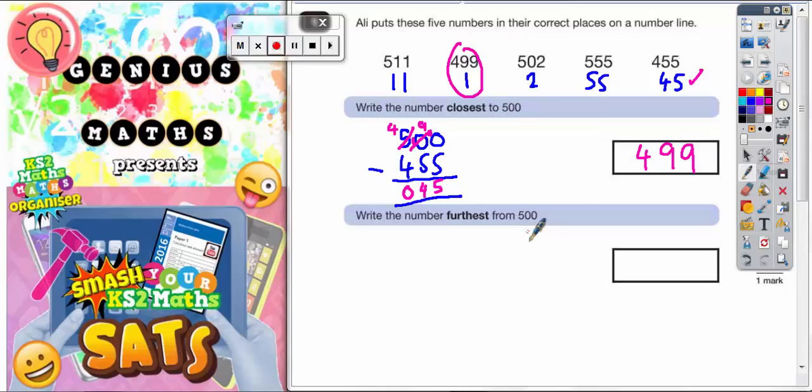And the one which is furthest away from 500 is going to be the one with the biggest gap. And the biggest gap, if these numbers in blue here are the gaps, the biggest gap is this 55. So the number that's furthest away is going to be the 555. And that's question 1 done.